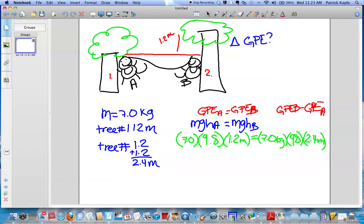And once we multiply both sides, we get, for MGH at A, we get 82.3 equals 164.6. Now we have to use our second equation, which is GPE B minus GPE A. And once we subtract 164.6 from 82.3, we get 82 joules, which is the correct answer.